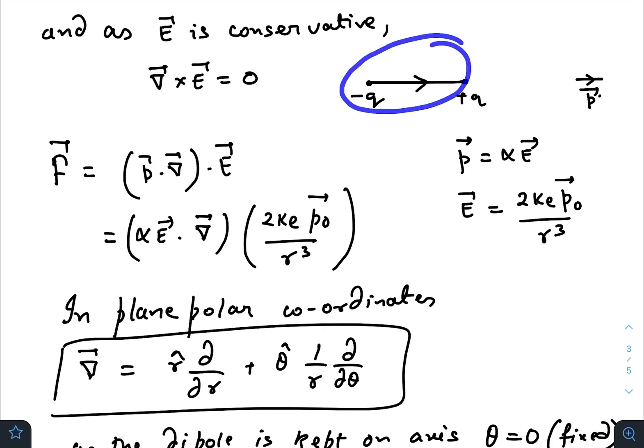Suppose this is our dipole and here is our small molecule of dipole moment p vector. This dipole is creating some electric field here along the axis. The formula for electric field due to a dipole along its axis is 2 k e p naught over r cubed, where p naught is the dipole moment of the first dipole.